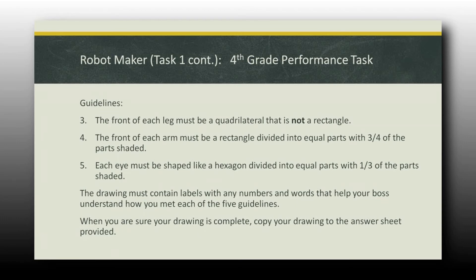The front of each arm must be a rectangle divided into equal parts with three quarters of the parts shaded. So now they need to know their fractions. They need to be able to draw a rectangle and divide it equally. Each eye must be shaped like a hexagon. Another terminology. Another geometric shape. Equal parts with one third of those parts shaded. Again, fractions. The drawing must contain labels with any numbers and words that help your boss understand. When your drawing's complete, you've completed this first part of this problem. And remember, this is only a fourth of their test.